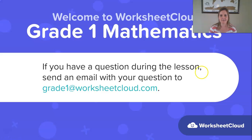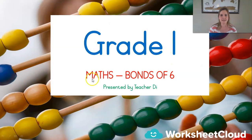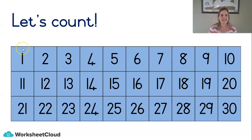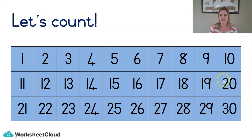Let's get started. This is a Grade 1 maths lesson and today's topic is bonds of six. Do you know what that means? What are bonds? Well, we're going to figure that out. Let's count. Can you count with me? 1, 2, 3, 4, 5, 6, 7, 8, 9, 10, 11, 12, 13, 14, 15, 16, 17, 18, 19, 20, 21, 22, 23, 24, 25, 26, 27, 28, 29, 30. Very good.